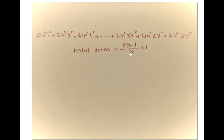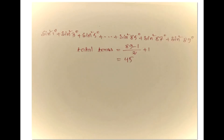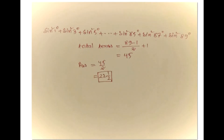Total terms will be last term 89 minus first term 1 divided by difference. Here the difference is 2 — 1, 3, 5 — so difference is 2, plus 1. So our total terms will be 45. So our answer will be 45 divided by 2, which is 22 and a half.